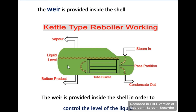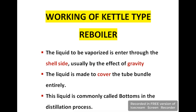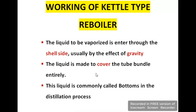Here you can see the liquid level line, and that level is always maintained with the help of this weir. Now we will discuss the working process of the kettle type re-boiler. The liquid to be vaporized enters through the shell side, usually by the effect of gravity. This means the feed enters the shell by gravity and no mechanical equipment is used for this process. This liquid, which covers the tube bundle, is commonly called bottoms in the distillation process.